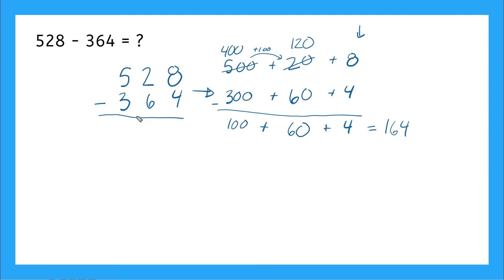Now let's try to do the same thing over here with our unexpanded version. So we start with our ones place here. That's where we always start our subtraction. Eight minus four. That gives me four. Now I go to my tens column, two minus six.